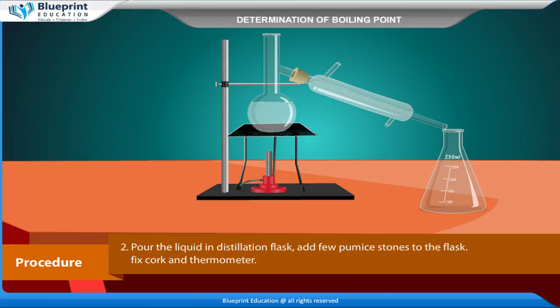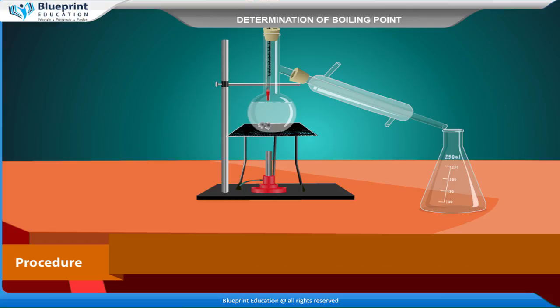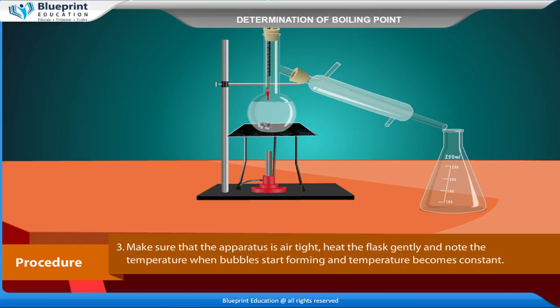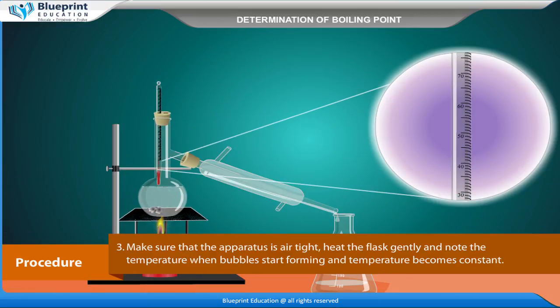Procedure: Arrange the apparatus as shown in the figure. Pour the liquid in the distillation flask and add a few pumice stones to the flask. Fix the cork and thermometer, and make sure that the apparatus is air-tight. Heat the flask gently and note the temperature when bubbles start forming and the temperature becomes constant.